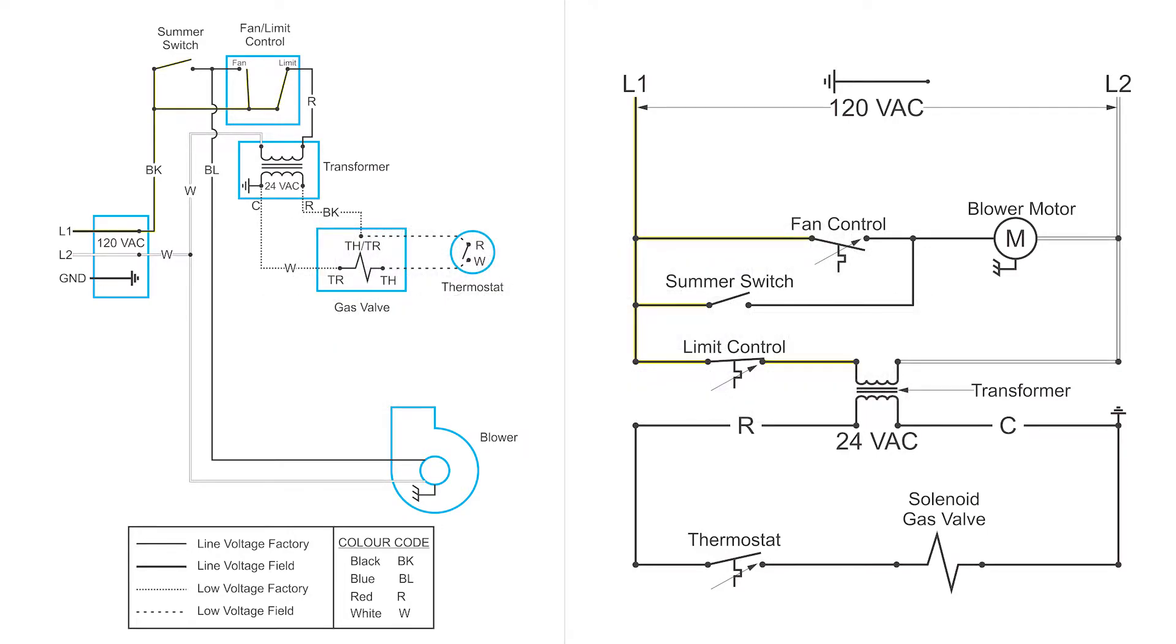So let's turn the breaker onto the system and you'll notice that L1 gets powered up to the summer switch, the fan switch, and the limit switch. Now the summer switch and fan switch are open. So the fan will not run. That's the blower motor down below. But the limit is closed. So that powers up the red wire going down to the transformer.